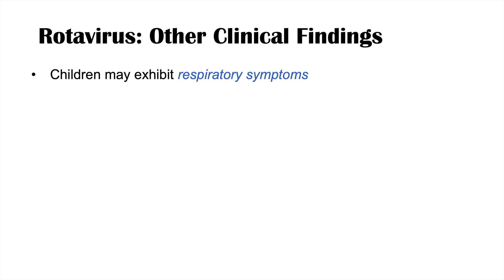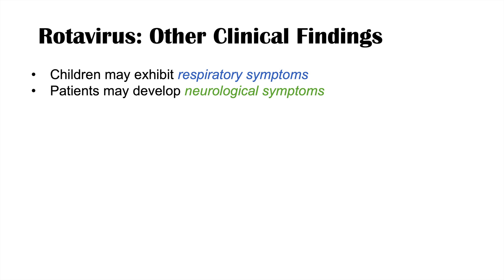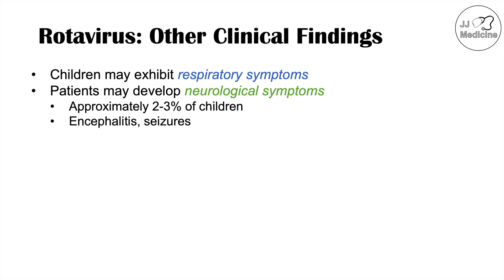Some other clinical findings: some children may exhibit respiratory symptoms, though it's unclear whether rotavirus itself or an associated pathogen causes these. Notably, approximately 2% to 3% of children infected with rotavirus may develop neurological symptoms, including encephalitis and seizures — presenting with altered mental status, fever, and convulsions.